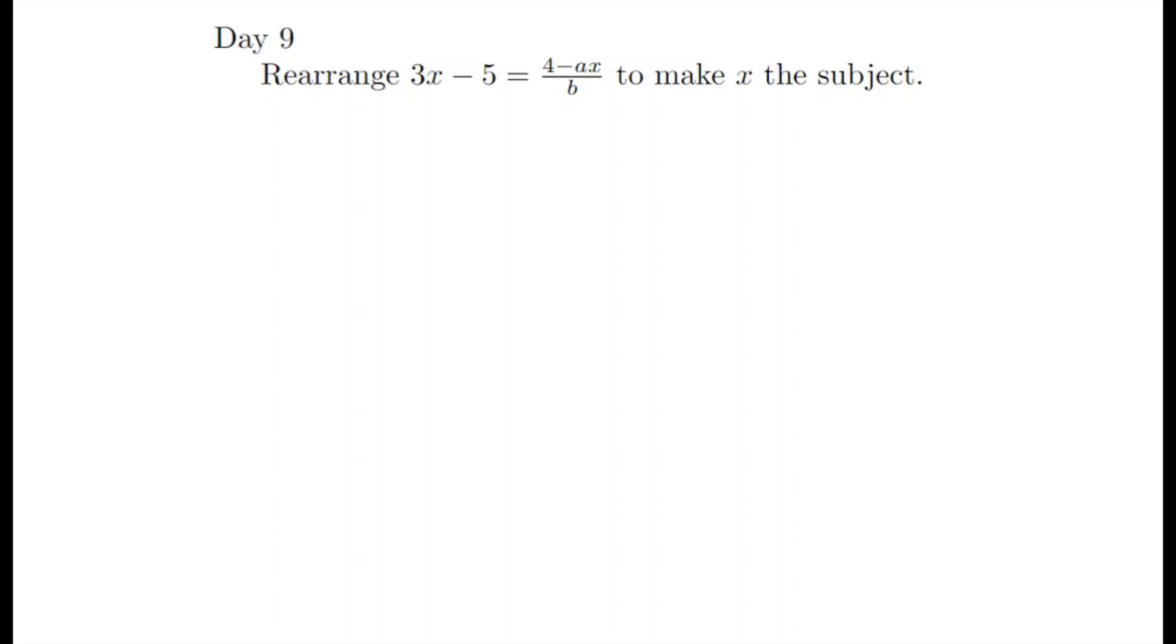We're going to look over yesterday's question which was rearrange 3x take 5 equaling 4 take away ax over b to make x the subject.